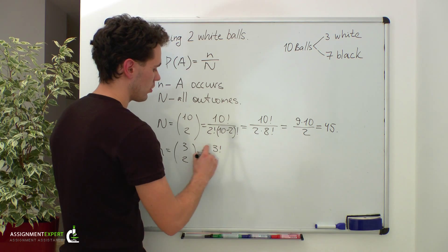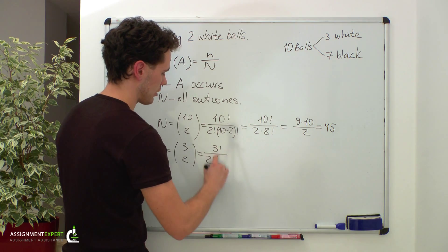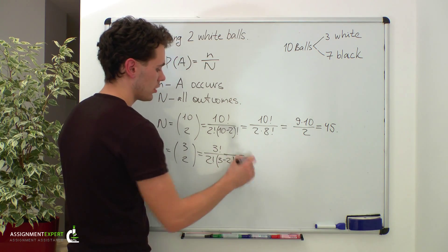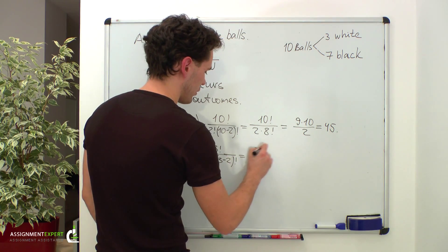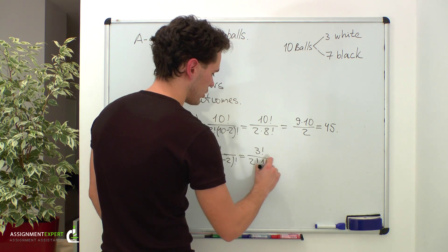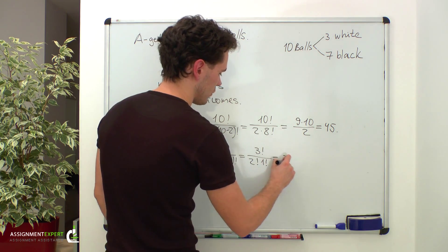Which gives us three factorial over two factorial times three minus two factorial, which equals three.